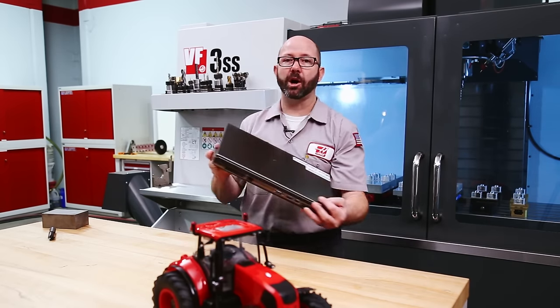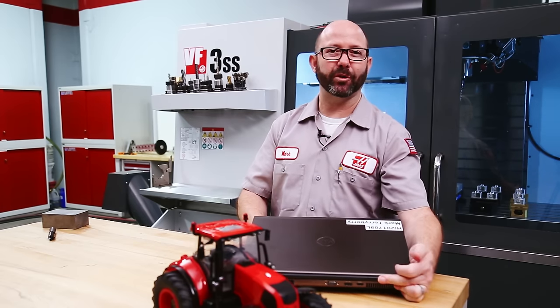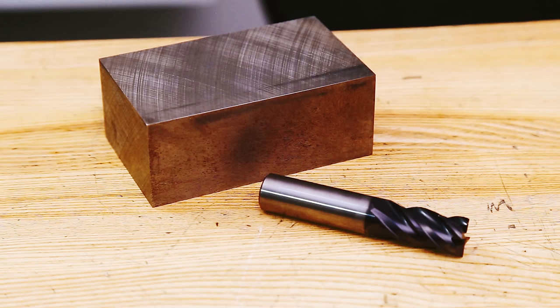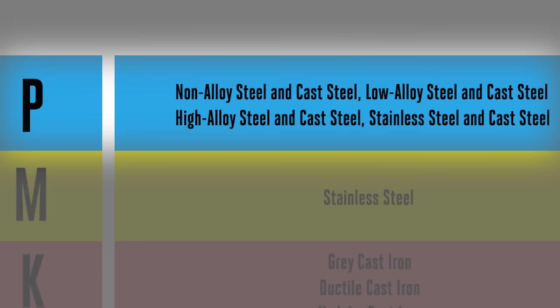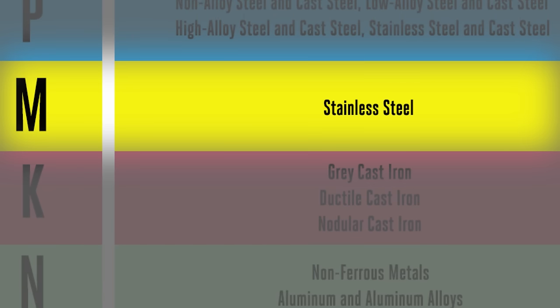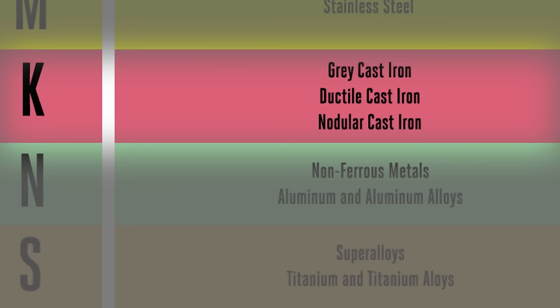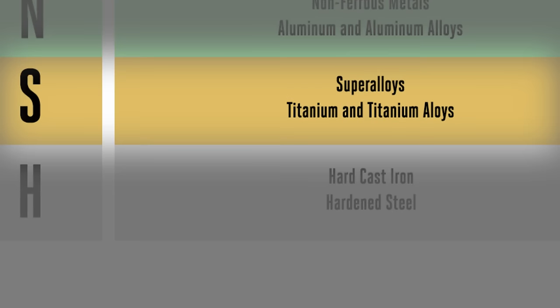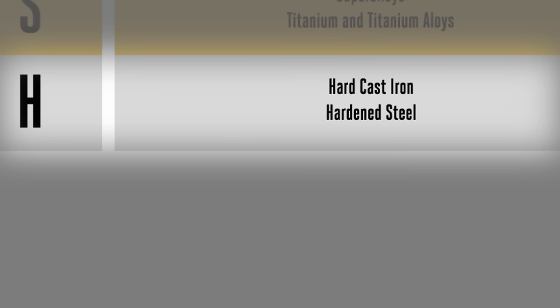We can download the manual for any tool manufacturer in PDF form. Once that catalog is opened up, we're going to search for the material group section — that's going to tell us what material group our exact material falls into. Our materials are color coded: P is for steels, M is for stainless steels, K is for cast irons, N is for non-ferrous metals without iron in them like aluminum or magnesium, S is for super alloys like titanium, and H is for hard cast irons or hardened steels.